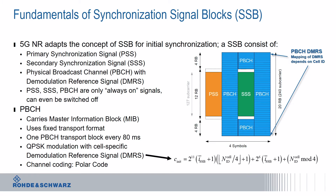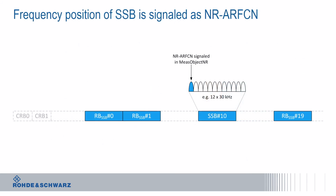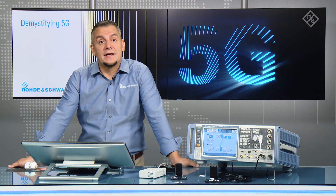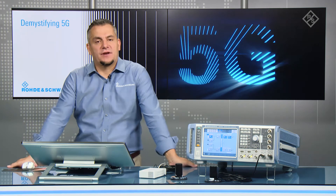The PBCH carries the Master Information Block, is still QPSK modulated, and uses polar codes — a new channel coding format introduced with 5G NR. Importantly, demodulation reference signals are embedded within the SSB. Since the PBCH occupies a wider bandwidth than in LTE, these DMRS are necessary, and their initialization sequences are dependent on the physical cell ID, which comes from the PSS and SSS. The SSBs in 5G NR have a key flexibility: unlike LTE where synchronization signals were always centered around the carrier frequency, SSBs can be placed anywhere within the signal bandwidth.